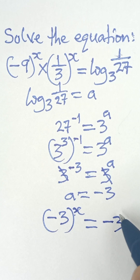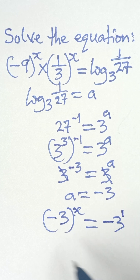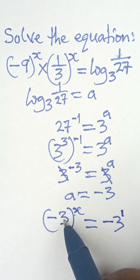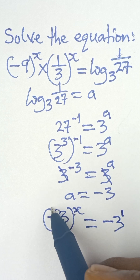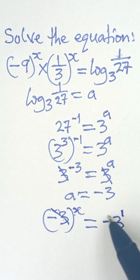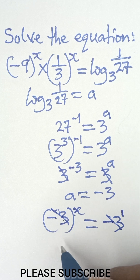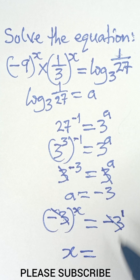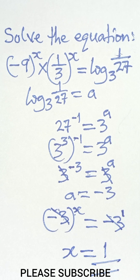We can write the right-hand side as negative 3 raised to the power 1. Since we now have negative 3 raised to the power x on the left and negative 3 raised to the power 1 on the right, and the bases are equal, the powers must also be equal. Therefore, x equals 1 is the final answer.